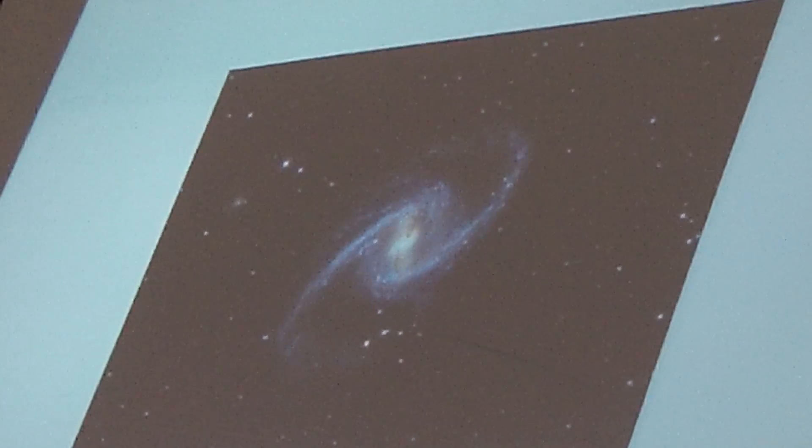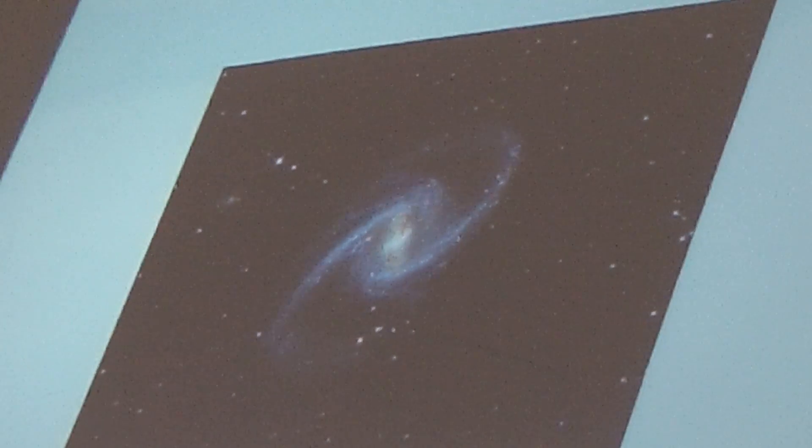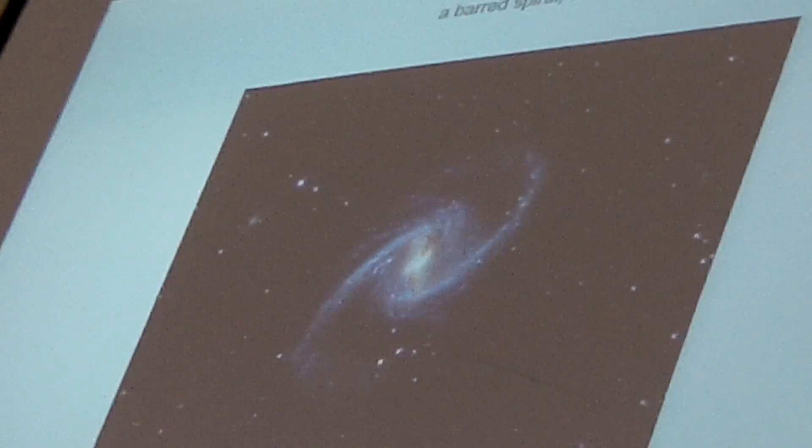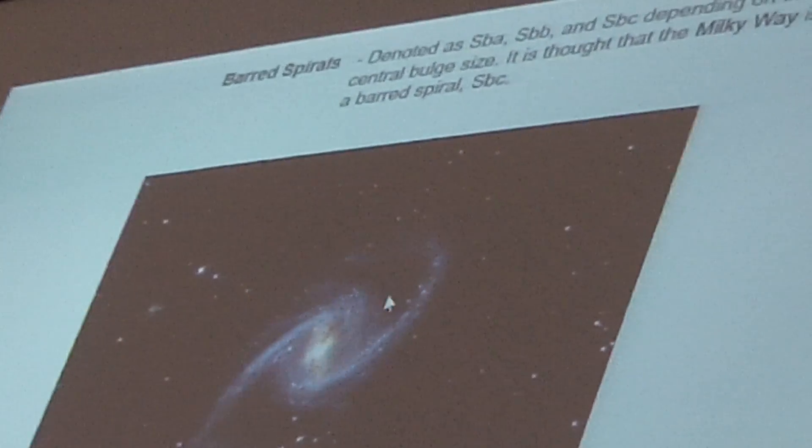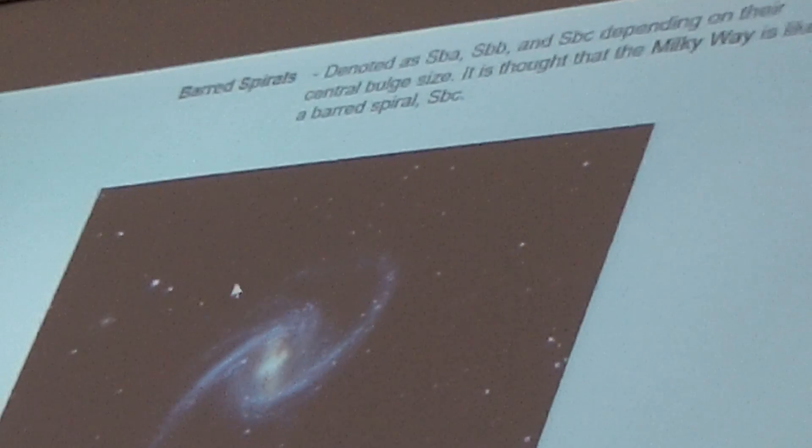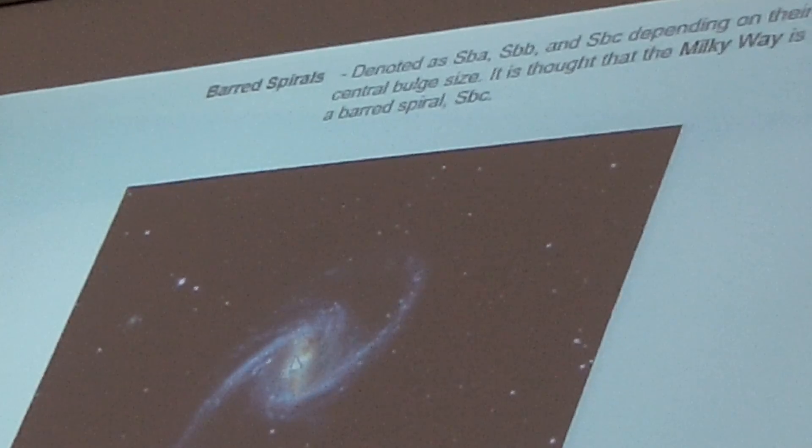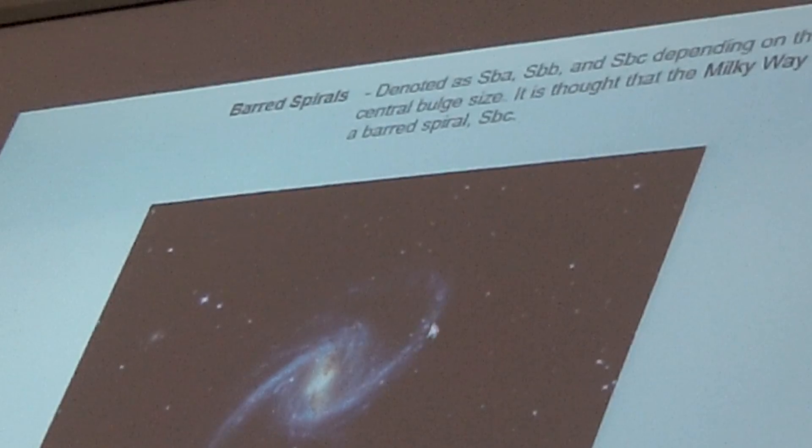So, barred spirals are SBA, SBB, SBC. A is the biggest center and tightest, most tightly wrapped. C is the smallest center and most loosely wrapped.